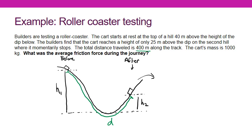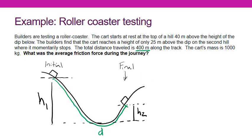We want to know the friction force so we can consider reducing it to allow the coaster to get over the next hill. This problem has a varying force changing in direction — it's not one we could solve before without energy considerations. Now we can use energy conservation. We've drawn our picture and assigned variables, but using energy means we'll also need to think about the initial velocity at the start position and the final velocity at the end position.